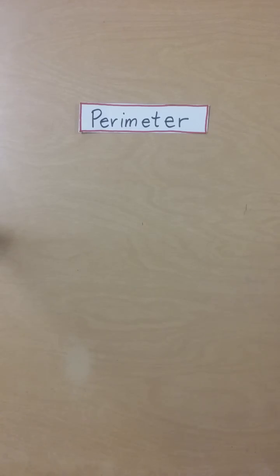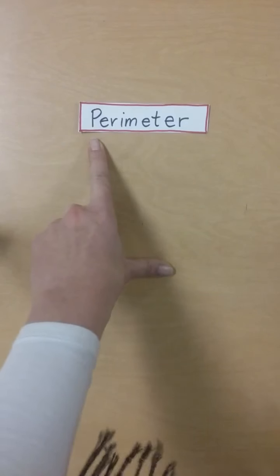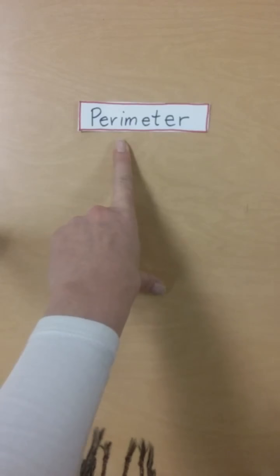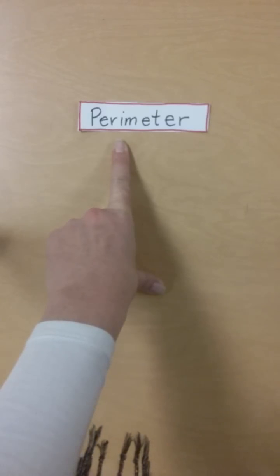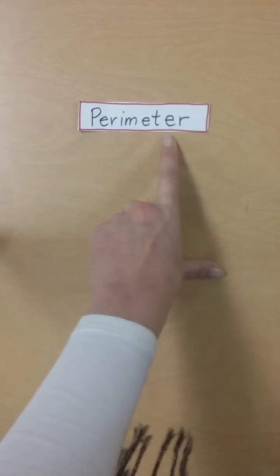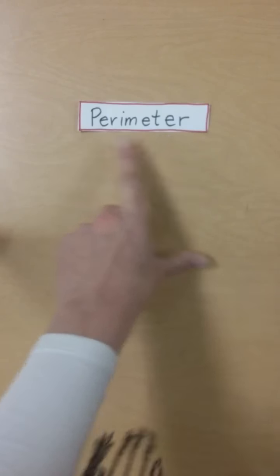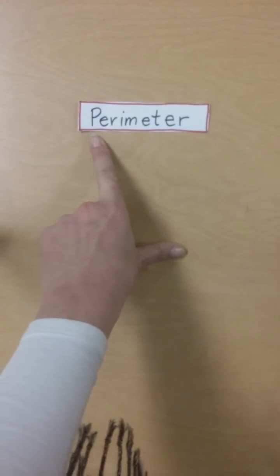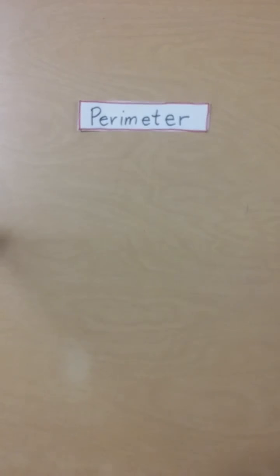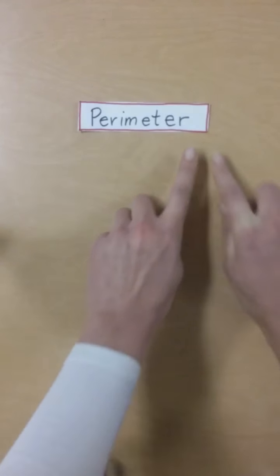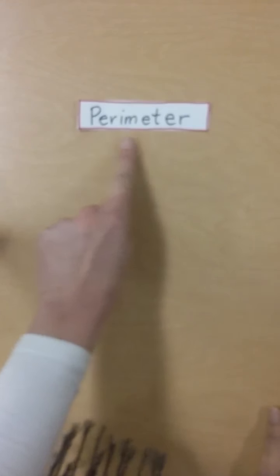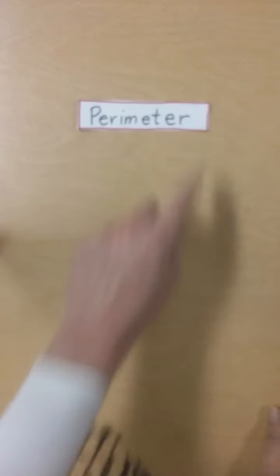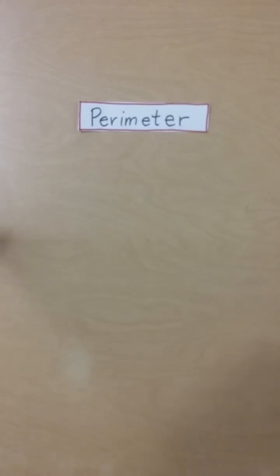Today's lesson is about perimeter. The way I like to remember it is the prefix peri means around or about, and meter is a unit of measure. So the word perimeter in my mind means measuring around something. I have a red line drawn around this little card that says perimeter to help me remember that.